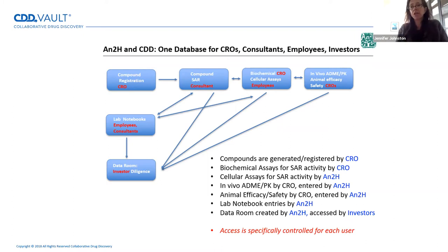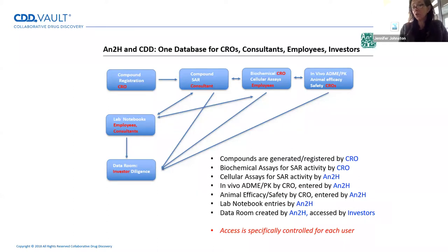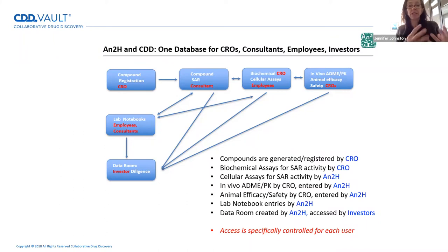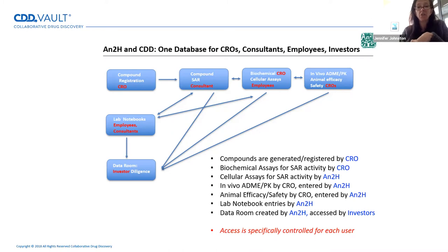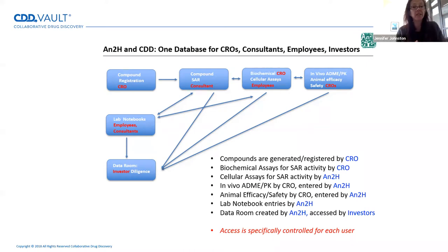CDD really allows me to control access to the database where I can have my specific CROs enter their data directly. For example, let's say we have new SAR compounds that my chemist in California has designed. People in China will make those compounds and register them into the database, which then triggers shipment to our CRO in New Jersey to run biochemical assays. That biochemical data then gets entered into the database and my med chem consultants can log into CDD and see what's going on with the SAR — both the compounds that have been made and registered, as well as what's coming out of our biochemical assays.